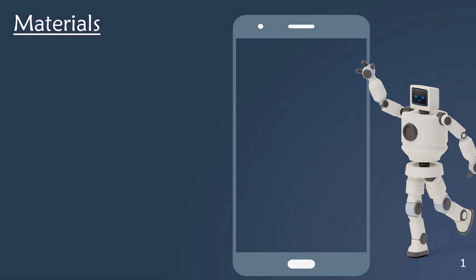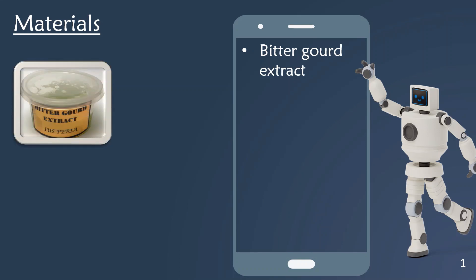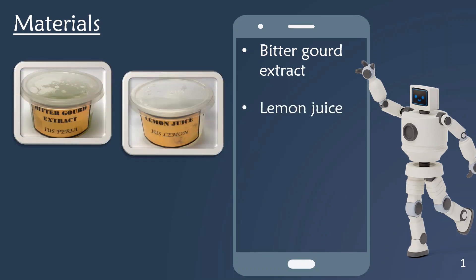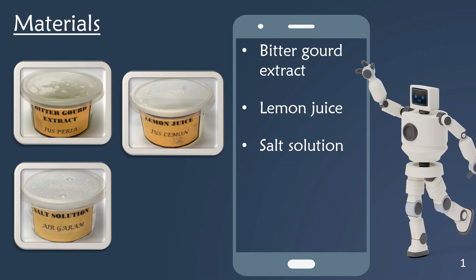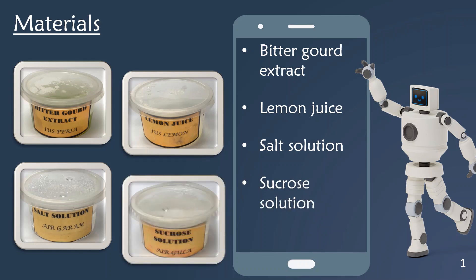The materials needed for this experiment are the bitter gourd extract, the lemon juice, the salt solution, and the sucrose solution.